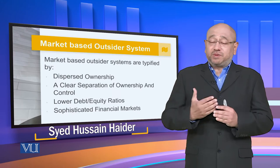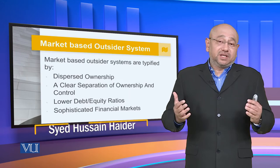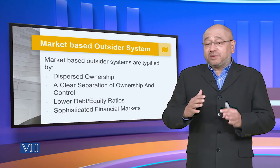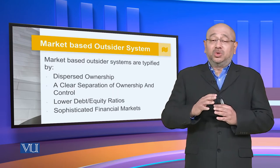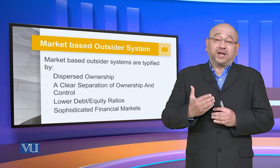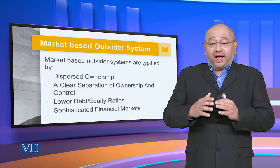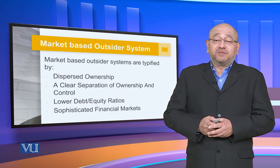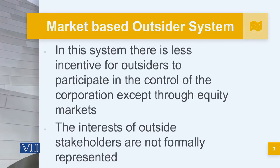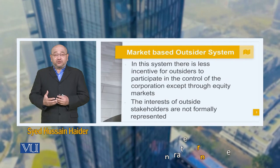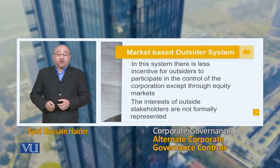It is external through dispersed ownership, which means there could sometimes be hundreds and thousands of shareholders. There is a clear separation of ownership and control — whoever the owners are, they have nothing to do with the control of the organization; they're not even part of the board of directors, and top management is independent in totality. We see lower debt-equity ratios and sophisticated market mechanisms in control.